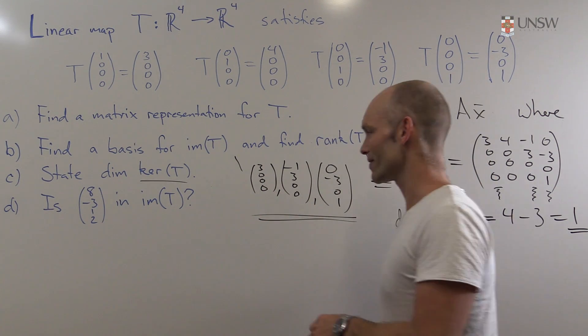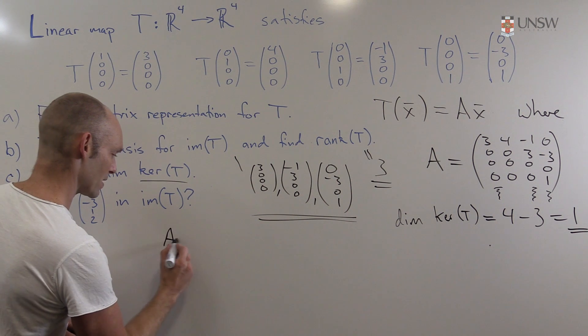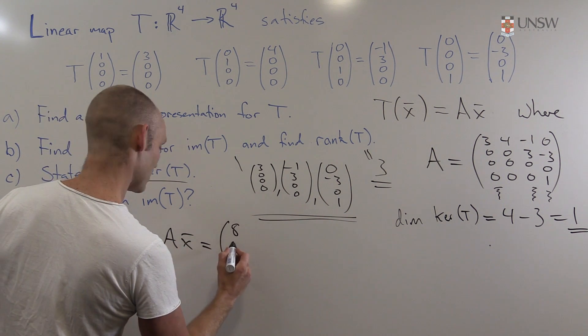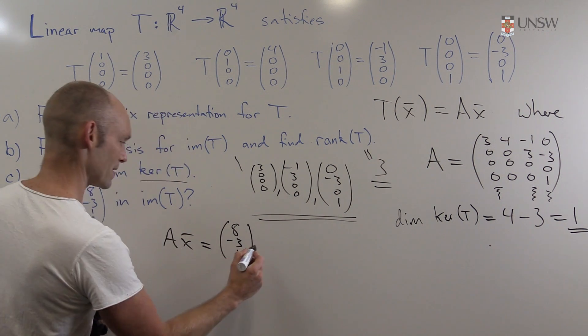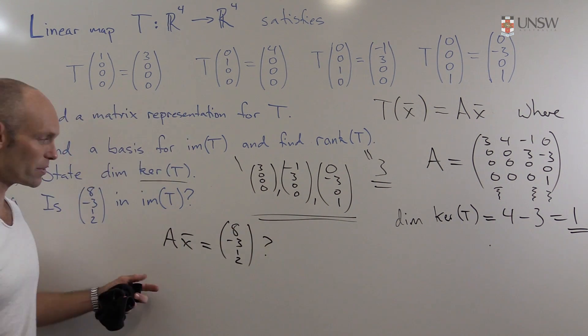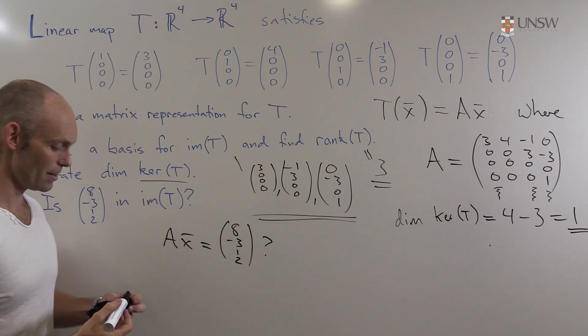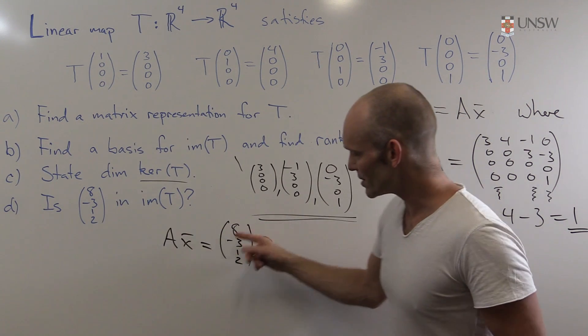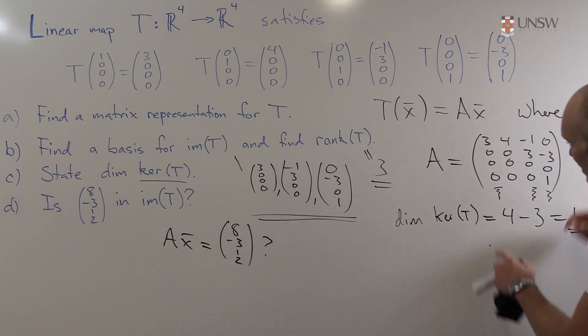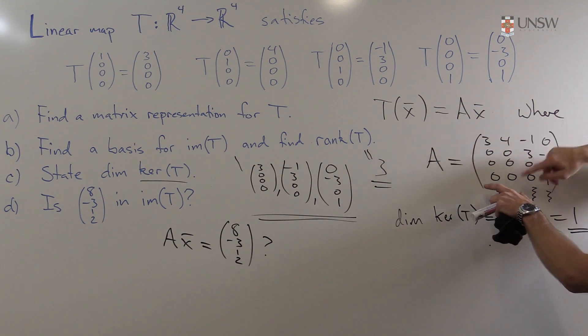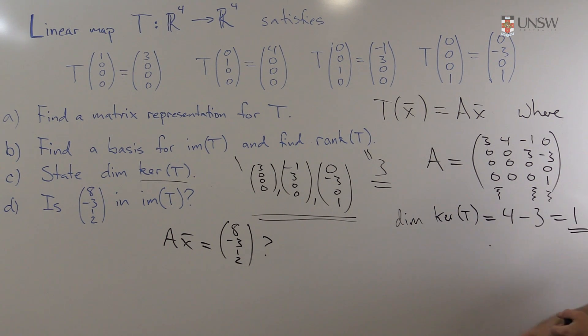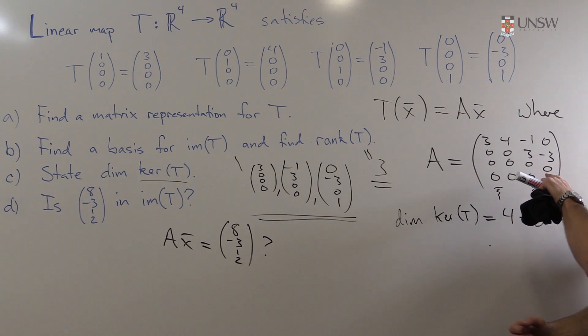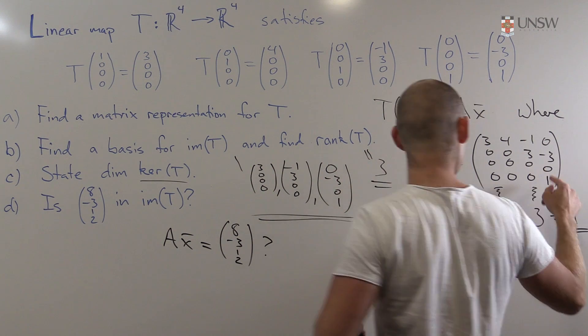Now, in general, we'd have to then ask, well, can we solve this sort of equation? Ax is equal to this vector, yeah, (8, minus 3, 1, 2). And then we row reduce and see whether there's a solution. And we could do that, except there's a shortcut here. And if you look at this particular vector here, and compare it with the vectors, the column vectors over here, you might note that the third coordinate, well, here we've got a 1, and here we've got a bunch of zeros.